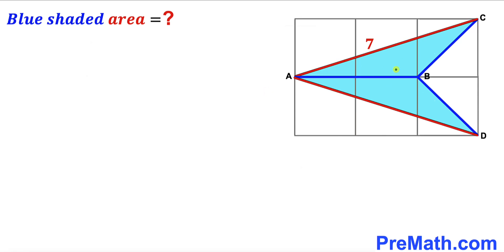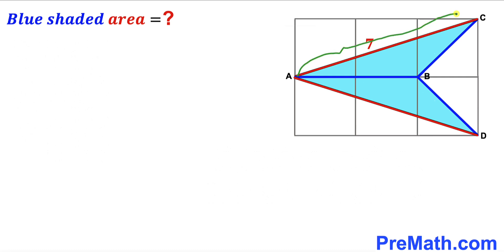Welcome to Premath. In this video we have got this blue shaded polygon ADBC fully confined in this given square grid as you can see in this diagram. All the given grids are square, meaning all side lengths are equal, and segment AC is seven units. Our task is to calculate the area of this blue shaded region.